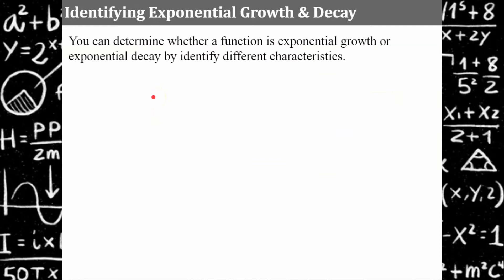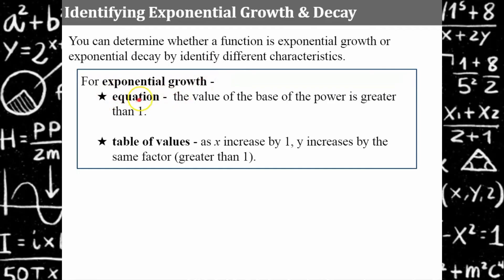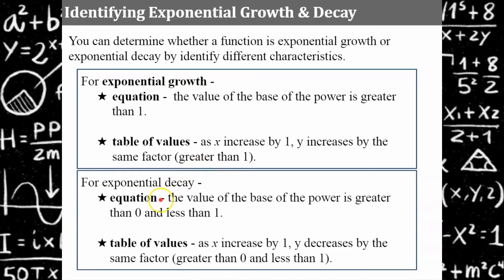Let's talk about identifying exponential growth and decay functions. You can determine whether a function is exponential growth or decay by identifying different characteristics. For exponential growth in an equation, the value of the base of the power is greater than 1. In a table of values, x increases by 1 as y increases by the same factor greater than 1. For exponential decay in an equation, the base of the power is greater than 0 and less than 1. In a table, as x increases by 1, y decreases by the same factor — greater than 0 and less than 1.